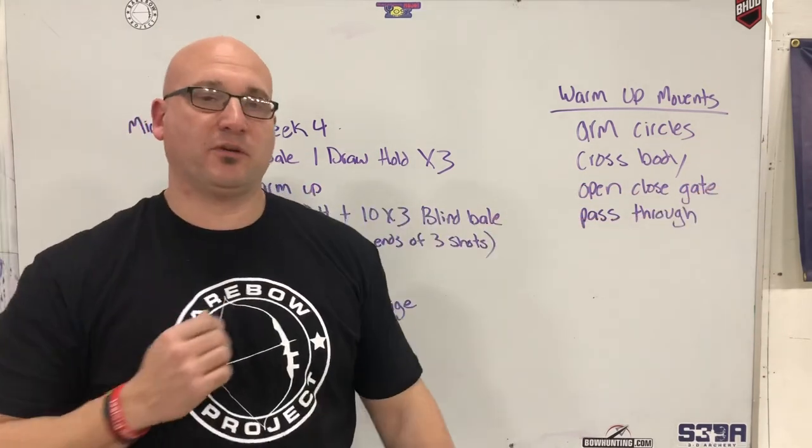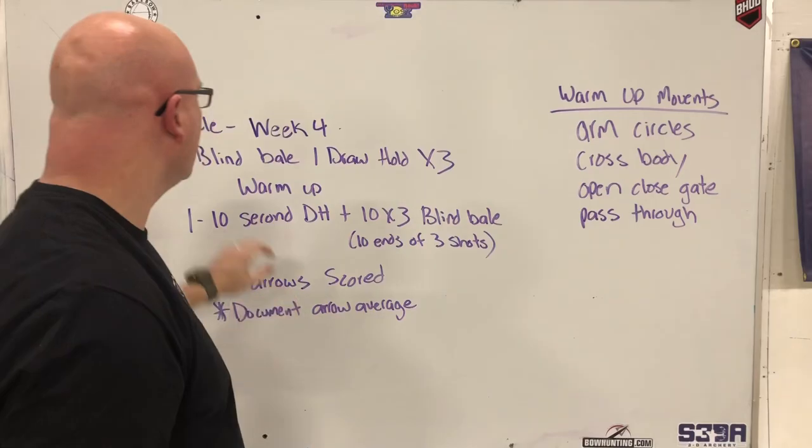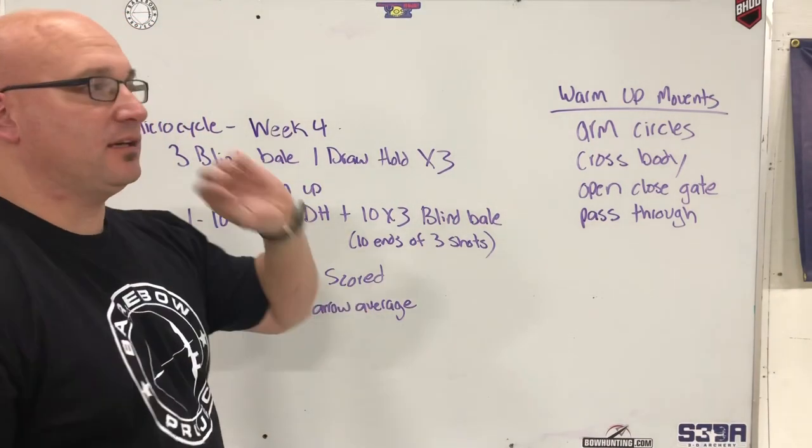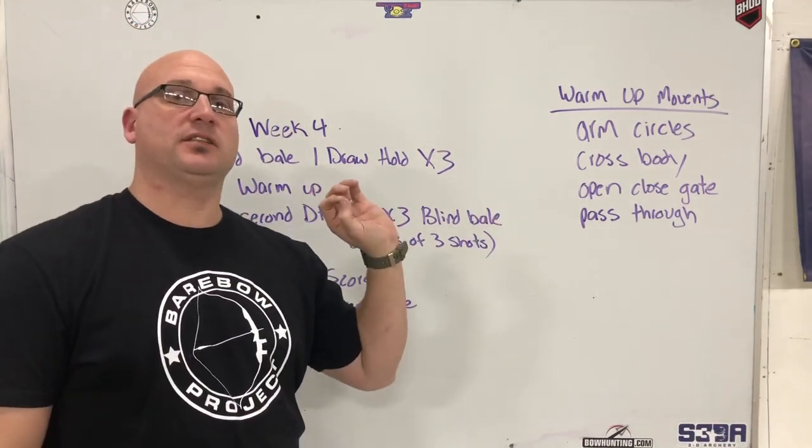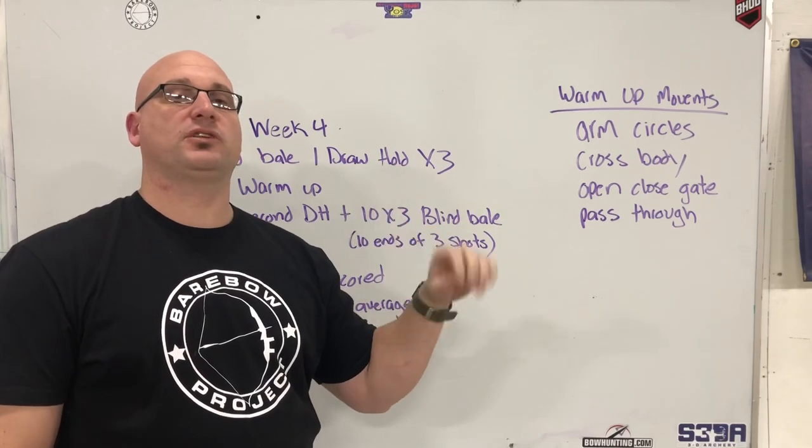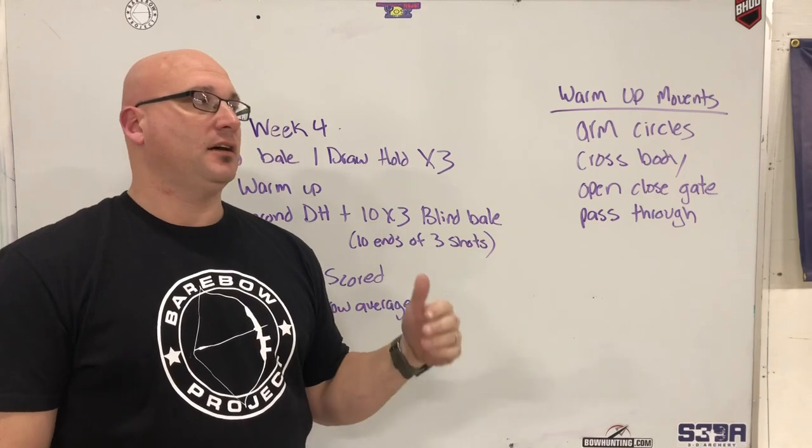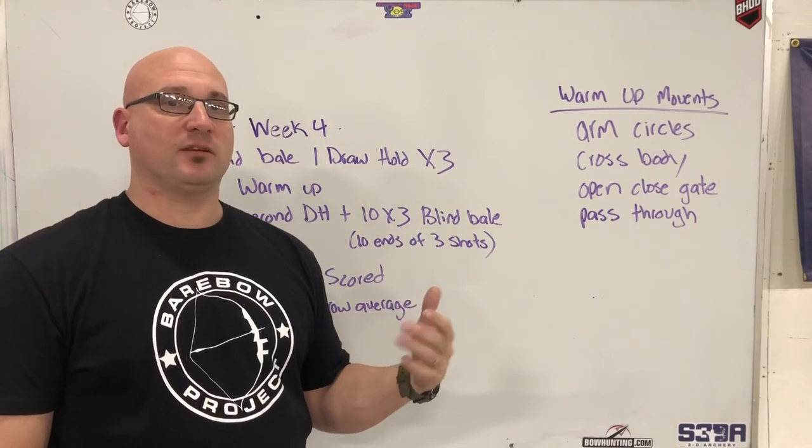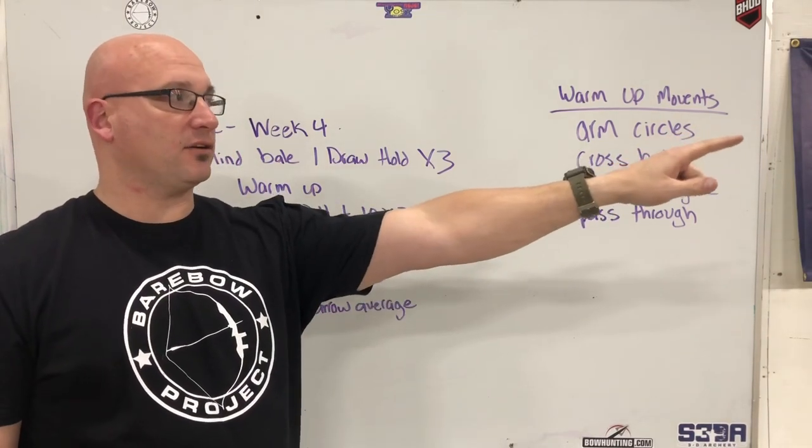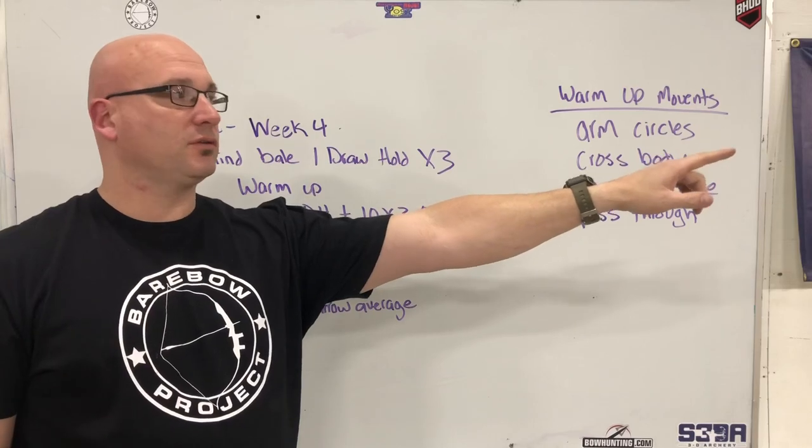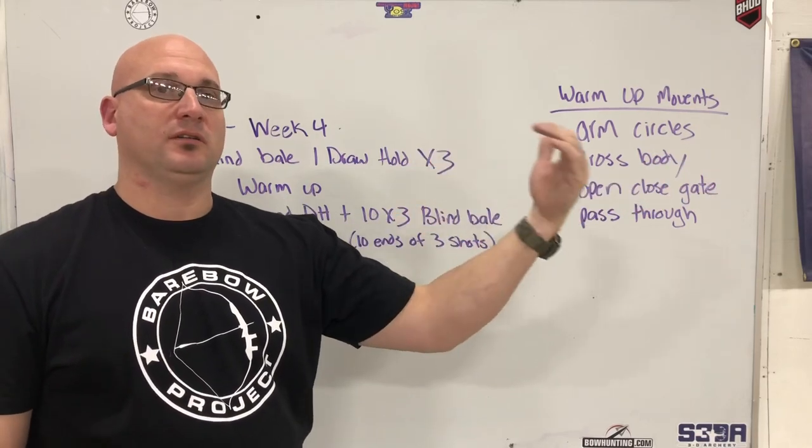So your blind bail should be very close, and you close your eyes after you aim, but you don't close your eyes and let go. You have to have that two to three second pause with blind bail because, let's face it, we want our arrow to float for two or three seconds before that release occurs.